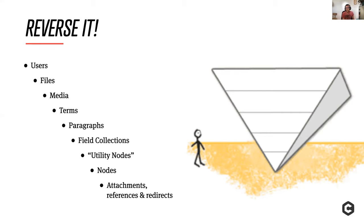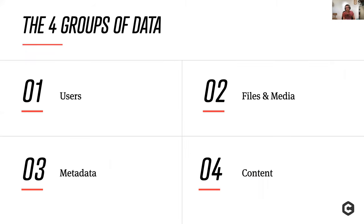Once we're done with terms, we continue up the ladder into our metadata parts — the paragraphs, field collections, and utility nodes. In some cases we're going to have dependencies between them, so it's important to map these dependencies out and understand what has to come first. Once we have all this metadata together, we're ready to migrate the nodes themselves. After that, we often run small scripts to fix attachments, references, redirects, and path aliases.